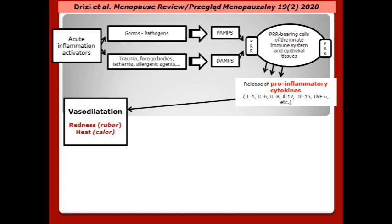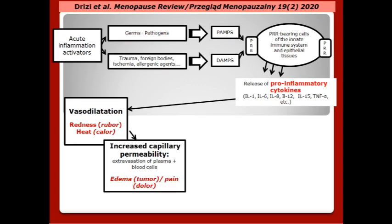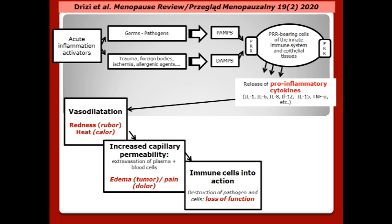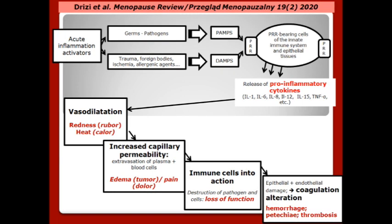Some cytokines act on the blood vessels, causing vasodilation — clinically, we have redness and heat. Some increase capillary permeability, causing extravasation of plasma and blood cells into the inflammatory site — clinically, we have edema and pain. When immune cells get into action, they cause destruction of the aggressor agent but also destruction of the body's cells — clinically, we have loss of function. Finally, destruction of epithelial and endothelial cells triggers coagulation — clinically, we have hemorrhage, petechia, and thrombosis.